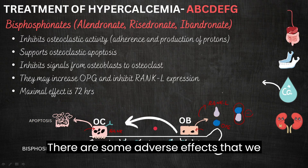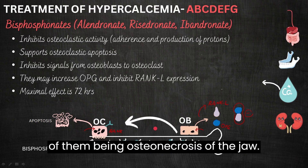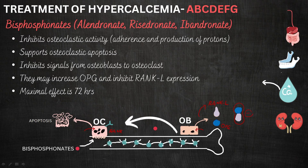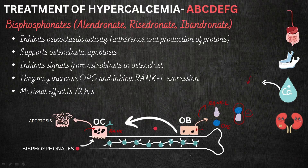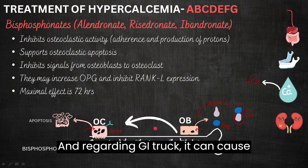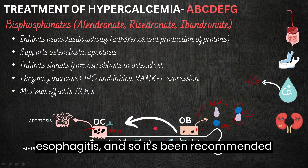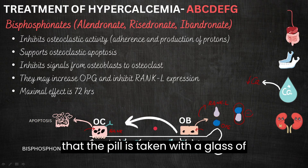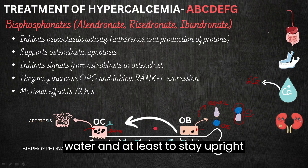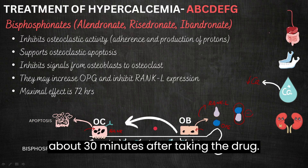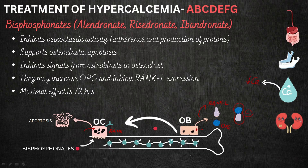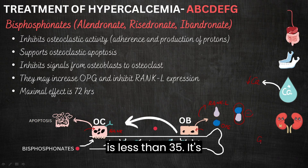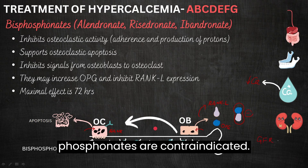There are some adverse effects from using bisphosphonates. One of them is osteonecrosis of the jaw. Since they prevent osteoclast activity, they can reduce calcium levels. Regarding the GI tract, they can cause esophagitis, so it is recommended to take the pill with a glass of water and remain upright for at least 30 minutes after taking the drug. They can also be nephrotoxic and can produce rash, among many other side effects. Importantly, bisphosphonates are contraindicated when the GFR is less than 35.